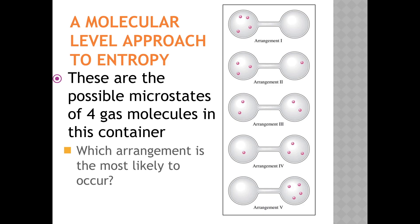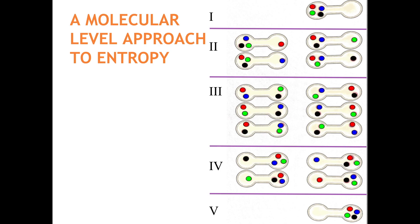To determine which of these arrangements is most likely to occur, we need only to consider which microstate has the most probable possibilities. The most probable microstate is arrangement three — the one with the gas molecules evenly spread out between the two bulbs. There are six ways that the four molecules can be in arrangement three, but only four ways for arrangement two and for arrangement four. The least probable states are arrangements one and five, because there's only one way to be in each. There's a six in 16 chance that the four molecules will adopt arrangement three.